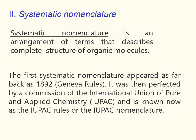The next is systematic nomenclature. Systematic nomenclature is an arrangement of terms that describes the complete structure of organic molecules. The first systematic nomenclature appeared as far back as 1892. It was then perfected by a commission of the International Union of Pure and Applied Chemistry and is known now as the IUPAC rules or IUPAC nomenclature.